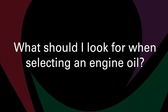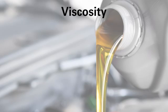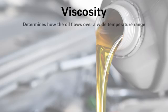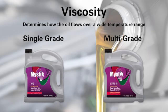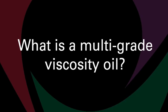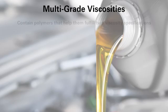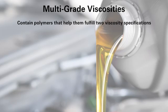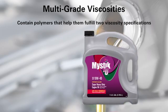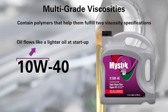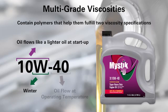So, what should I look for when selecting an engine oil? First, it's important that you have the correct viscosity. Viscosity is one of the most important properties of an engine oil because it determines how the oil flows over a wide temperature range. There are single grades such as SAE40, and then there are multi-grade viscosity oils which are most common today. Multi-grade viscosities contain polymers that help them fulfill two viscosity specifications. 10W40 is an example: it is designed to flow more easily at startup when the engine is cold. The 10W means the oil flows like a lighter oil at startup — the W actually stands for winter. Once the engine is up to operating temperature, a 10W40 oil flows like a heavier SAE40 oil.